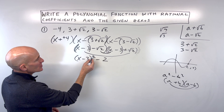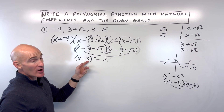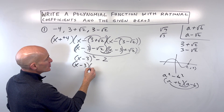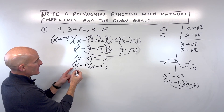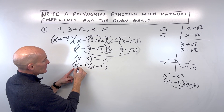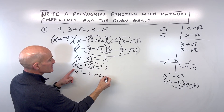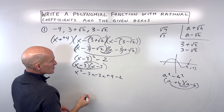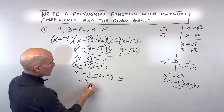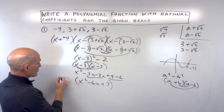A mistake some students make is saying x minus three squared is x squared plus nine, just squaring both terms. When you have a binomial squared, think of it as x minus three times x minus three. Multiplying that out gives x squared minus three x minus three x plus nine, minus the two. Combining like terms gives us x squared minus six x plus seven, multiplied by the factor x plus four.